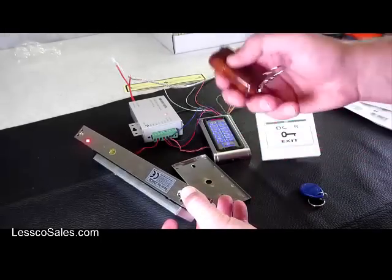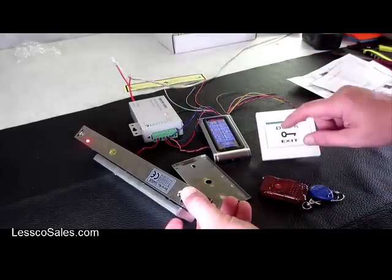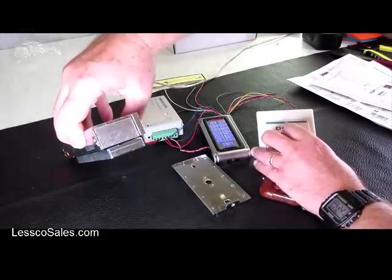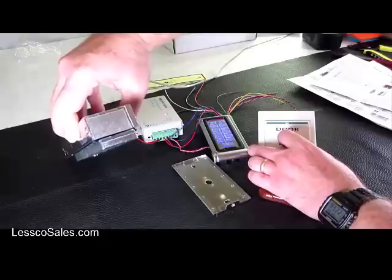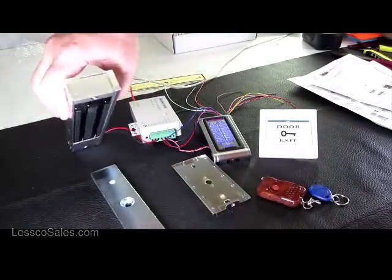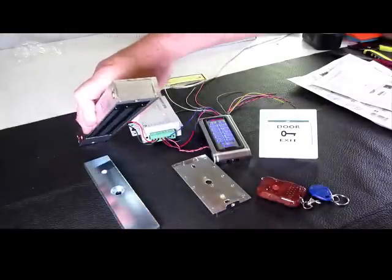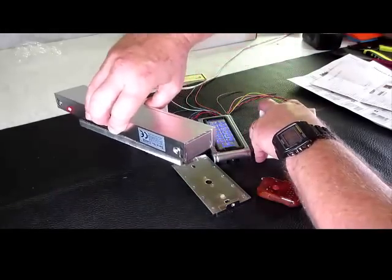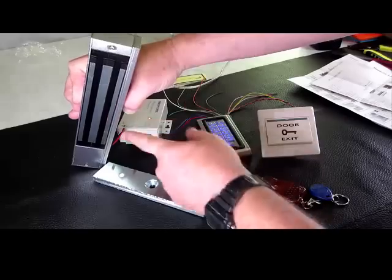So if I either hit the remote, one of these little RFID keypads, or my door access button, that lock should just come right off. Here's the door button, and there it is. I think it didn't fall off the way I was expecting. I'll try it again. There it goes.